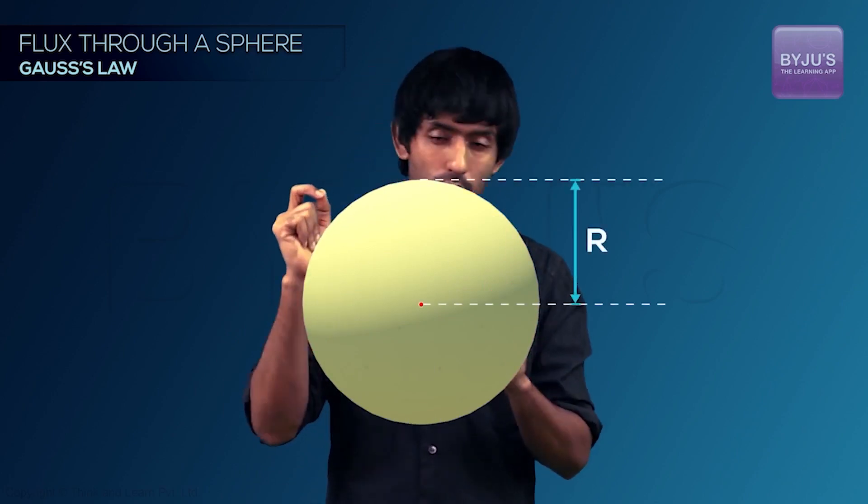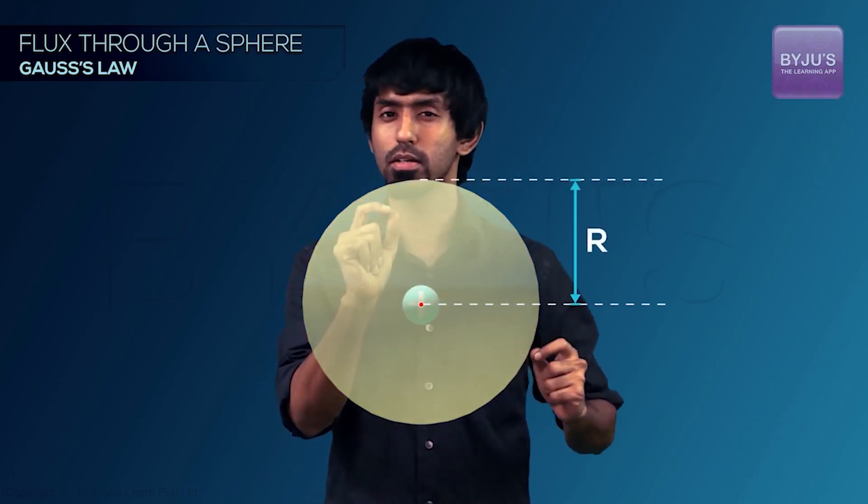Let's consider a sphere of radius R and keep a point charge right at the center. So the super special case, and calculate the net flux through that closed sphere because of this point charge. Let the point charge be positive Q. We're not losing any generality by doing that.